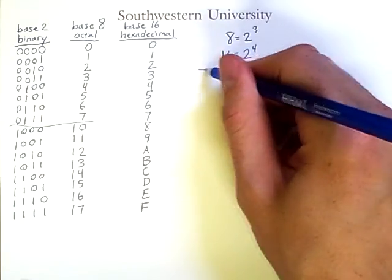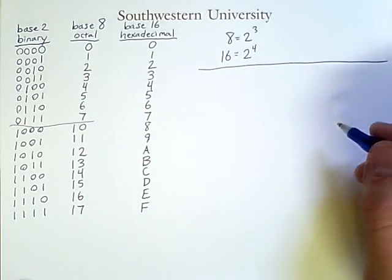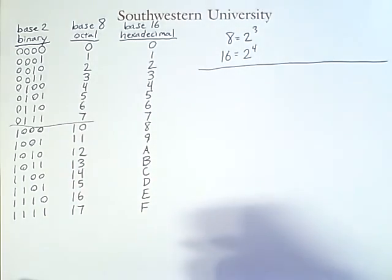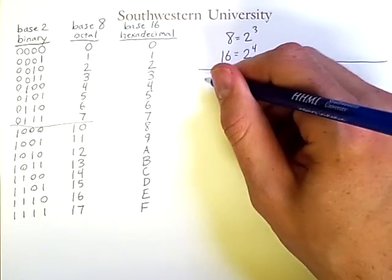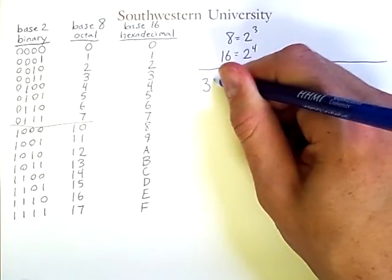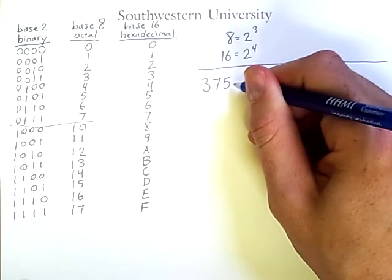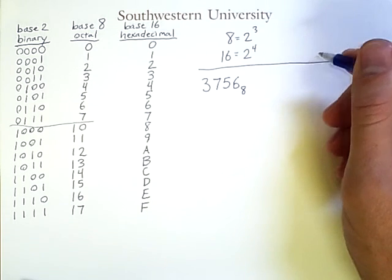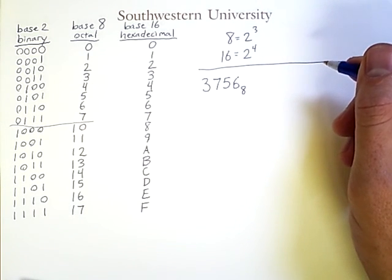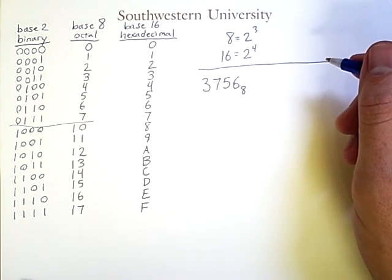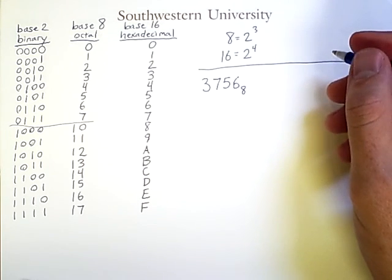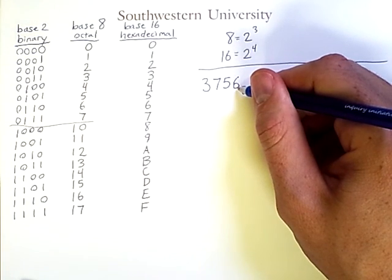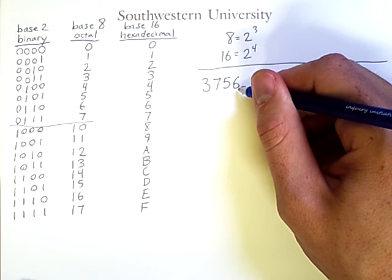This makes it very easy to convert between either of these number systems and binary. For example, if I have the number 3756 in base 8, this is an octal number, and I want to know what its binary representation is. I can simply take each digit on its own and convert it to a 3-digit binary number.